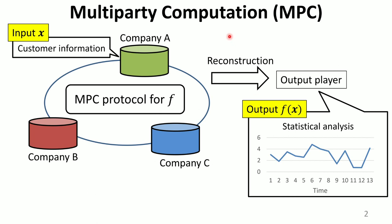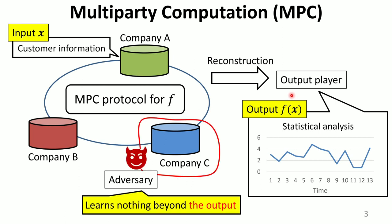First, we introduce multiparty computation. In this model, we assume several input players holding private inputs, and then they run some multiparty computation protocol for a function f. For example, we can consider some statistical analysis on private customer information held by several companies. After the protocol, an output player collects messages from the input players and obtains the value of the function. As for privacy, an adversary corrupts a subset of input players and sees their messages during the protocol. The privacy requirement is that the adversary learns nothing beyond the output.